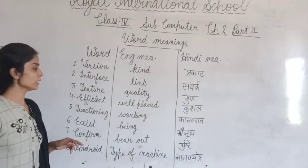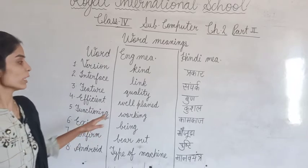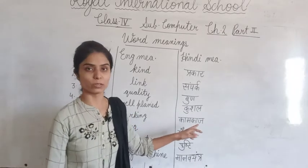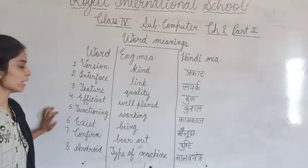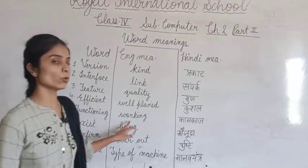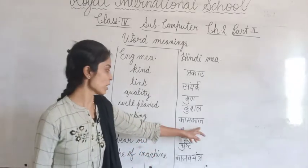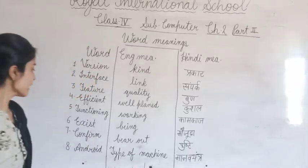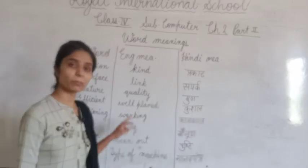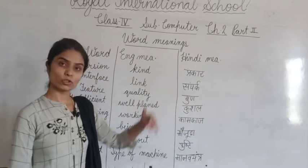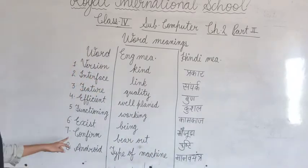Efficient — E-F-F-I-C-I-E-N-T — efficient means hota hai well-functioning. Next, functioning — F-U-N-C-T-I-O-N-I-N-G — functioning means workings, kaamkaj. Next, E-X-I-S-T, exist — exist means 'be mojooda'. Jo cheez hamare paas exist hoti hai, mojood hai.